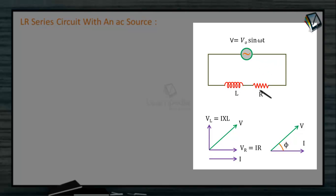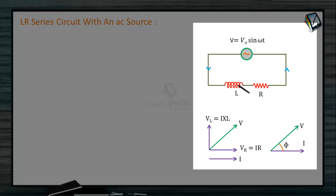Here VR is the potential across the resistor and VL is the potential difference across the inductor. Depending on the current I, they are not in the same phase. Across the resistor, the current and voltage are in the same phase, but across the inductor, the potential is ahead of the current.